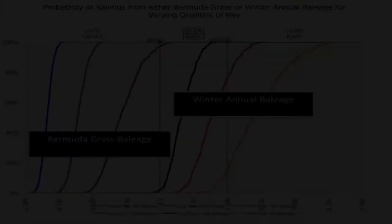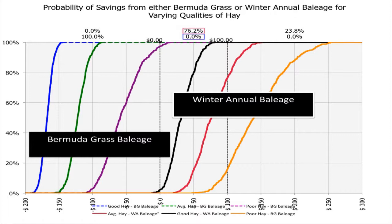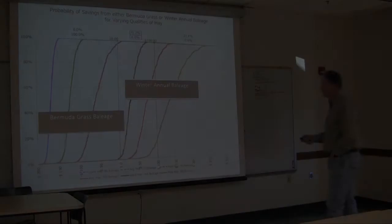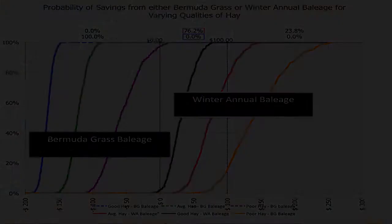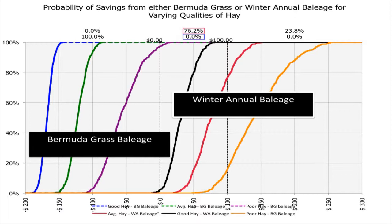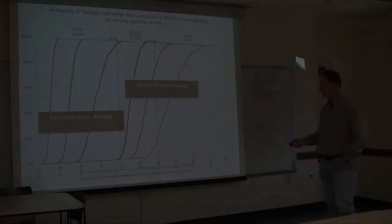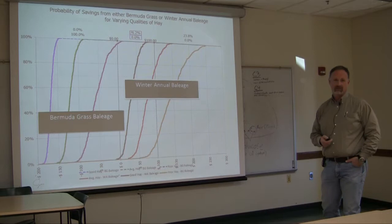Looking at these probability charts — the three lines on the left represent the probability that baleage will pay for bermudagrass. At zero net savings, there's only about a 1–2% chance baleage actually pays with bermudagrass. For winter annuals, the black line represents good conventional hay (smaller savings from baleage), the red line is average hay, and the yellow line is very poor hay like 2013. In nearly every instance, the bale wrapper paid for itself — only about a 1-in-500 chance it doesn't, and only when feed prices are extremely low and feeding losses were minimal.